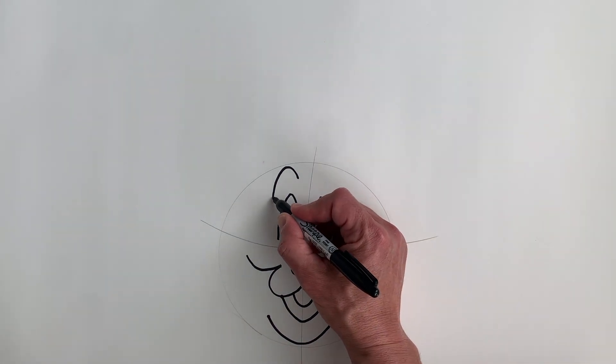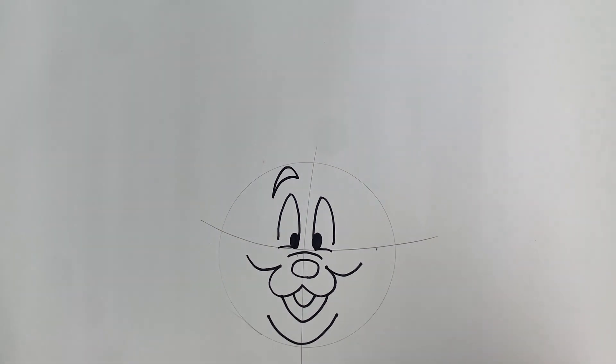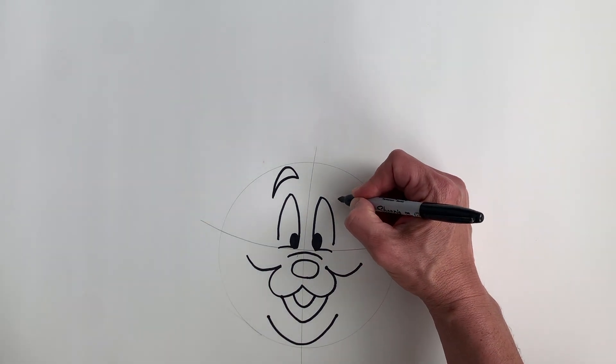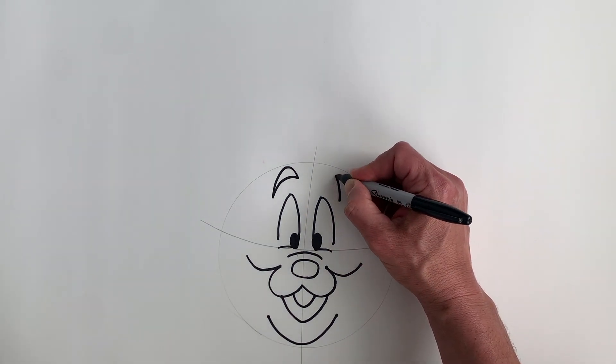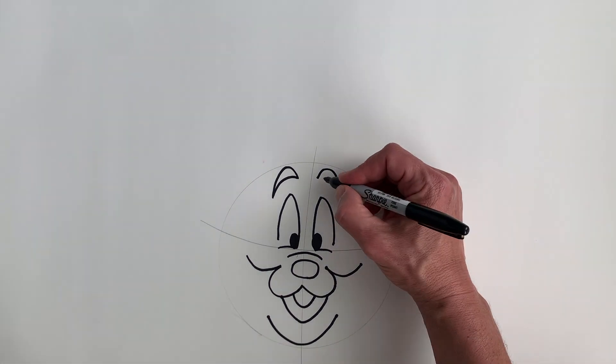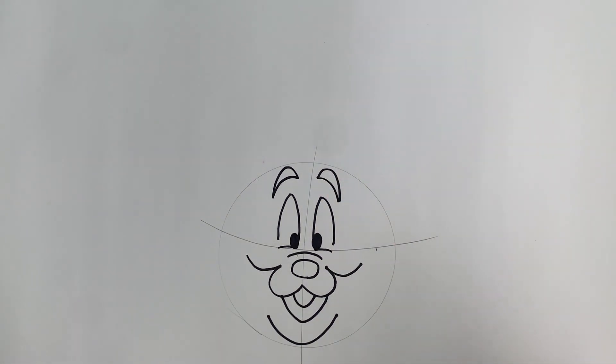And go to the bottom here and join them just like you see there. Same process, other side, right around here. Arch. And then going back the way, right here. Okay, good.